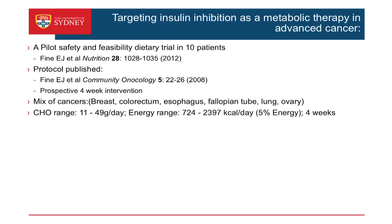The protocol set total energy from carbohydrates at 5%. Across the 10 individuals there was wide variance in total energy intake — anywhere from 724 up to almost 2,500 kilocalories. Individual total carbohydrate intake ranged from 11 grams per day up to 49 grams per day. In essence the simple rules were: no bread, no pasta, no rice, no potato, remove sugary drinks, and no dessert. Participants could eat beef, poultry, pork, fish, eggs, cheeses, and all the leafy green vegetables they wanted up to 5% of their energy.